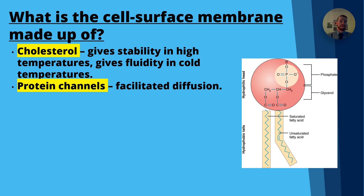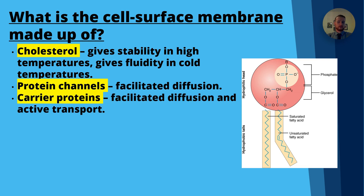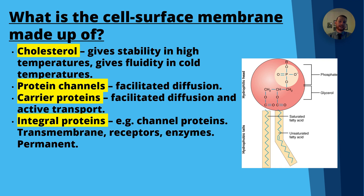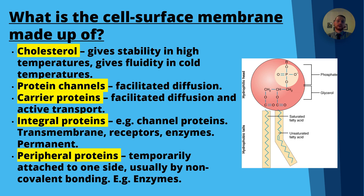Protein channels facilitate diffusion and allow molecules like water or glucose to get across the membrane. Carrier proteins are also involved in facilitated diffusion but also have a role in active transport. Integral proteins form things like channel proteins, transmembrane proteins, receptors, and enzymes, and they're permanent. Peripheral proteins, on the other hand, associate temporarily with the cell membrane, form non-covalent bonds, and have roles like acting as enzymes — you'll look at that in the secondary messenger model in your second year.